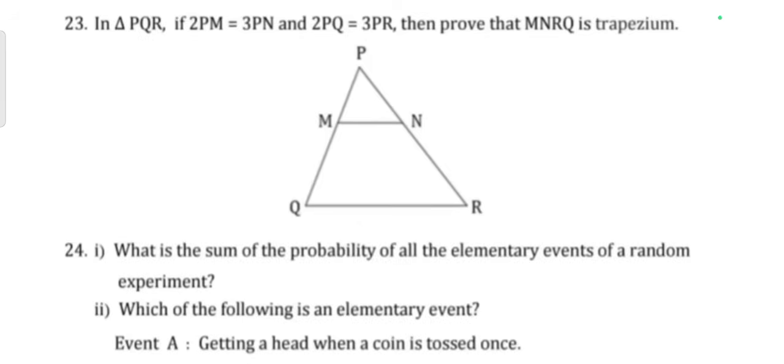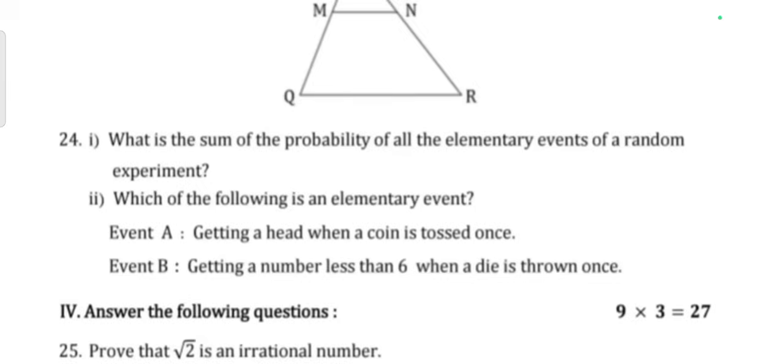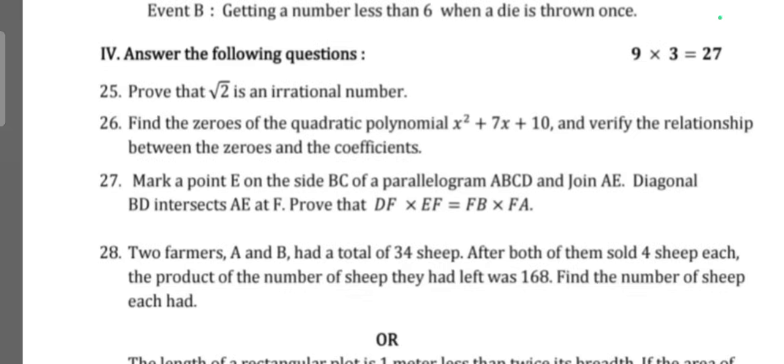Question 23: In triangle PQR, if 2PM is equal to 3PN and 2PQ is equal to 3PR, then prove that MNRQ is a trapezium. Question 24: What is the sum of the probability of all elementary events of a random experiment? Which of the following is an elementary event? Event A: Getting a head when a coin is tossed once. Event B: Getting a number less than 6 when a dice is thrown once.